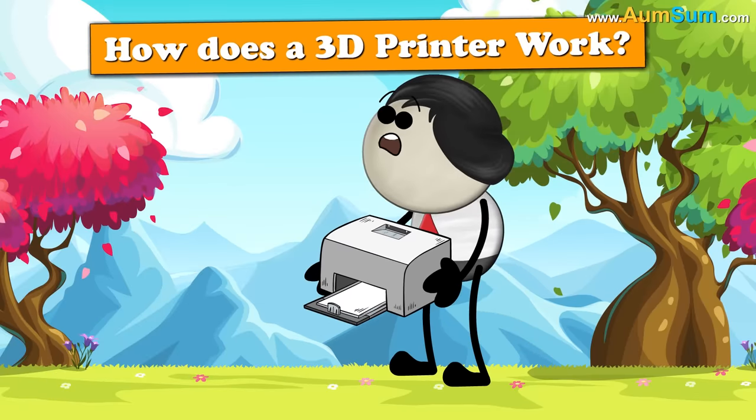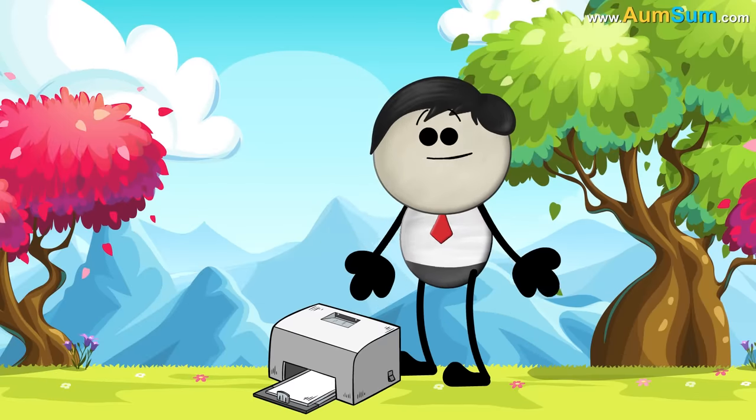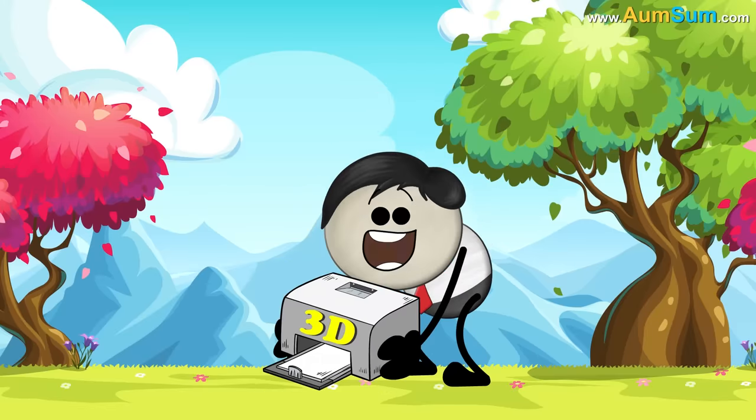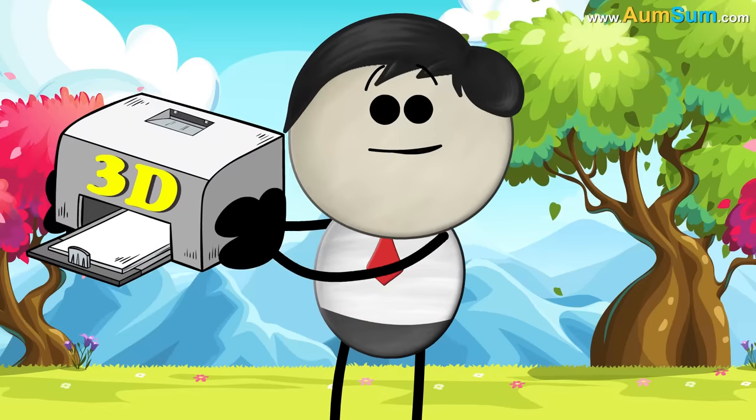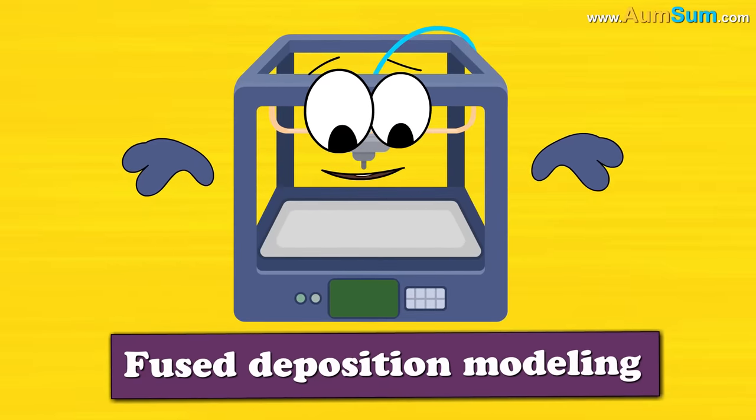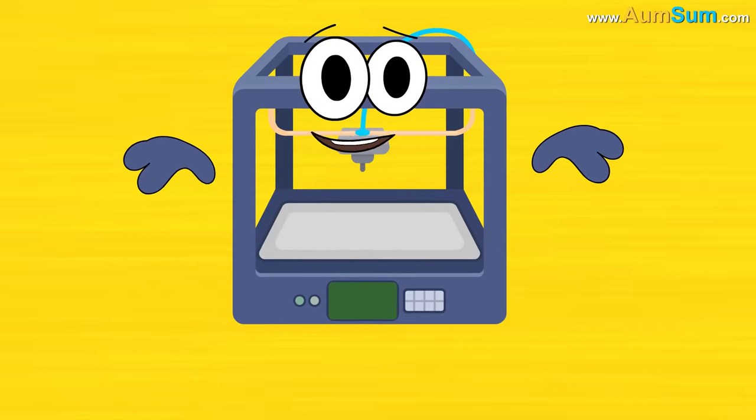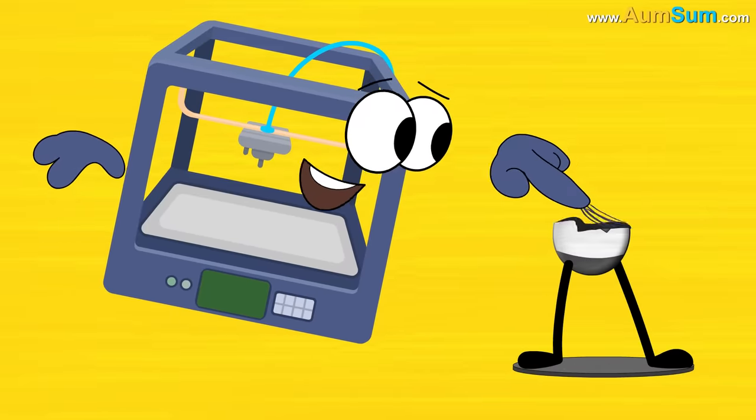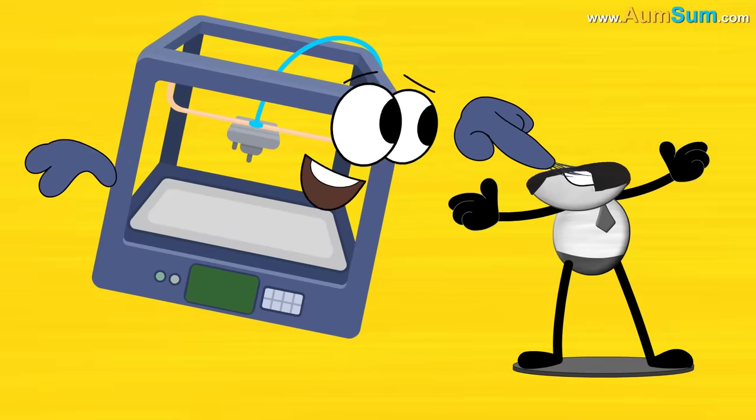How does a 3D printer work? Simple. Mix 3 and D and you get a 3D printer. Oh AumSum. A 3D printer uses a method called Fused Deposition Modeling. In this method, a 3D model is printed from the bottom up, one layer at a time, by repeatedly printing over the same area.